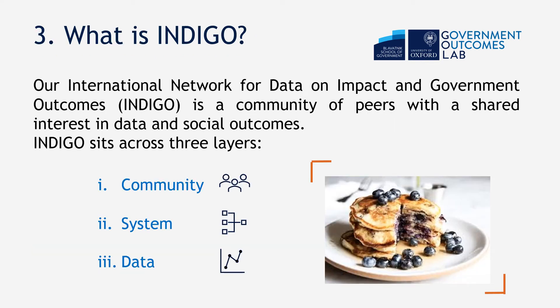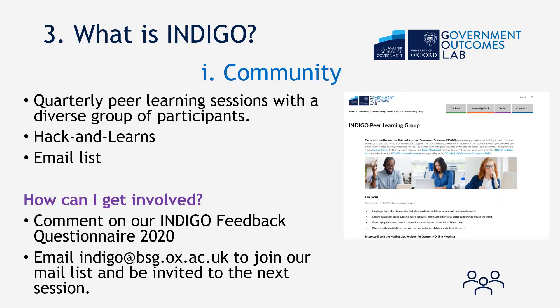So what is Indigo? Indigo has three layers: community, system, and data. I like to think of these as three pancakes. The first layer — the top pancake — is community. Our community layer includes quarterly peer learning sessions with a diverse group of participants. We have hack-and-learns, which are like hackathons, and an email list. You can get involved by commenting through our Indigo feedback questionnaire and by joining our email list.